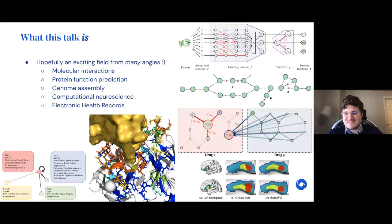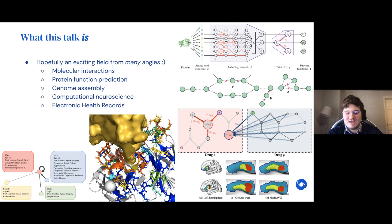Hopefully there's still a lot of very exciting parts of computational biology amenable to representation learning, and especially graph representation learning. I was quite fortunate to participate in many projects at the intersection of these two fields. I'll be talking about things like molecular interactions, protein function prediction, genome assembly, computational neuroscience, and electronic health records — provided we have enough time to cover all of these.